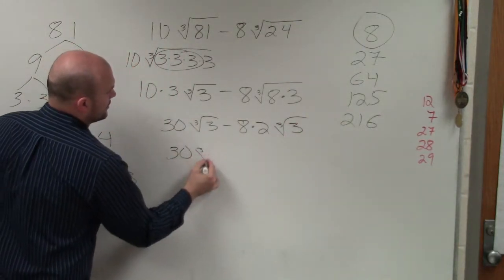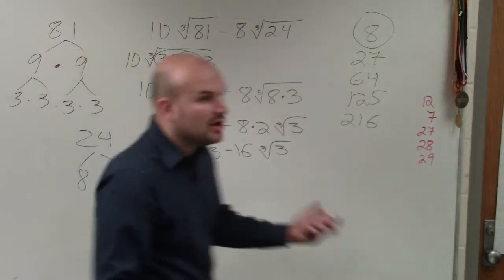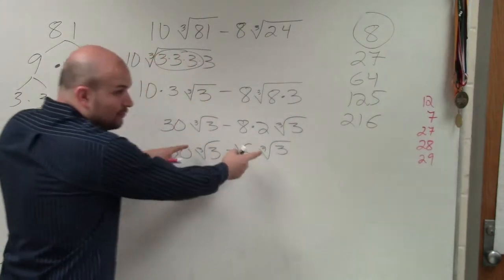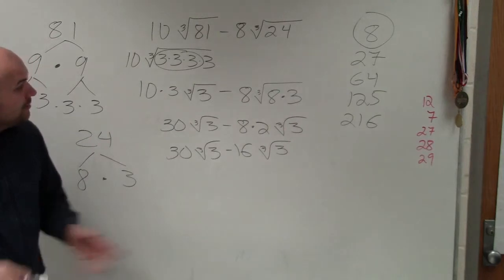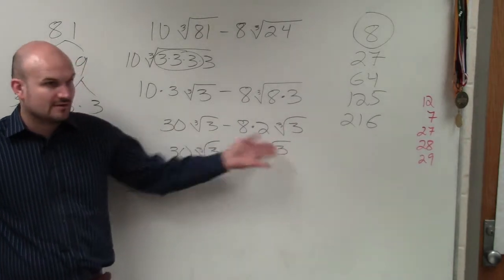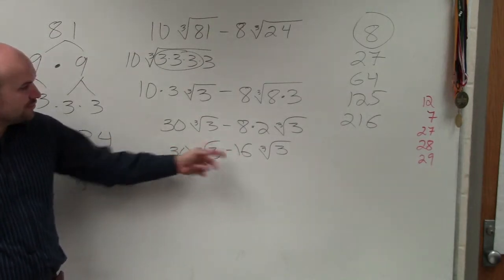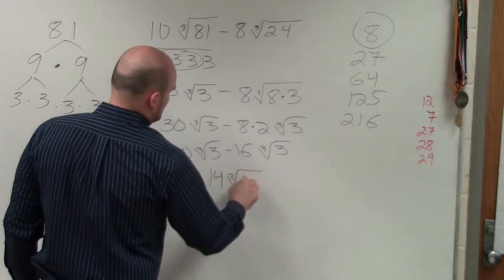So I have 30 cube root of 3 minus 16 cube root of 3. So when multiplication, the main important thing to multiply and divide, your root had to be the same. And then you just multiply and divide the radicands. However, when you're adding and subtracting radical expressions, you have to have the same root or the same index as well as the radicands have to be exactly the same. Well, in this case, I have the cube root of 3 for both of them. So now, I just subtract by my coefficients. So I just do 30 minus 16, which is 14 cube root of 3.